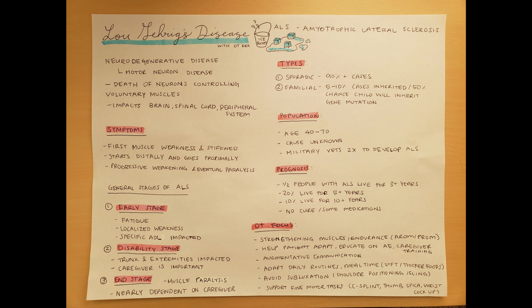Before going into the general stages of ALS, let's cover the types. There are two types of ALS. There is sporadic, which is pretty random — 90% of cases are sporadic ALS. The other 5% to 10% is familial, meaning the cases are inherited. If you have it, there's a 50% chance your child will inherit that gene mutation as well.